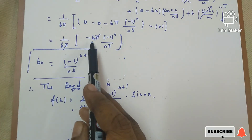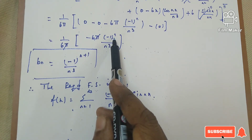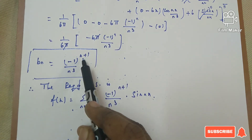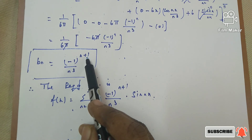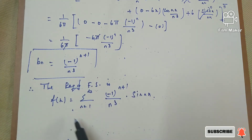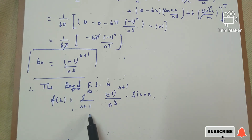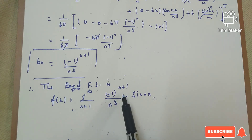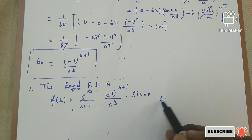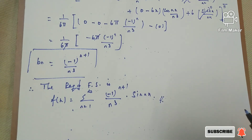So the required Fourier series is: since f(x) is an odd function, a₀ = 0 and aₙ = 0, and the series contains only the sine term. Therefore, f(x) = Σ (n=1 to ∞) [(-1)^(n+1) / n³] sin(nx). This is the required Fourier series. Thank you for watching.